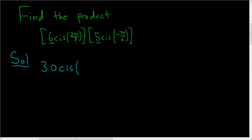And to figure out what goes here, all you do is add the angles. So let's go ahead and go to the side and work that out carefully. So we have 2π over 3 plus negative π over 6.